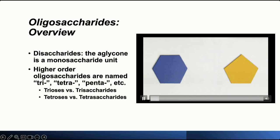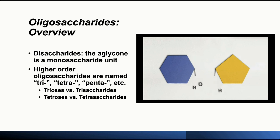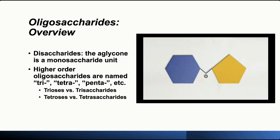These are two monosaccharides that meet each other and go through a condensation reaction. During this reaction, one molecule gives up its hydrogen ion and the other gives up its hydroxyl group. This produces a water molecule, and the two monosaccharides form a bond called a glycosidic bond. Because the reaction gives off water, it's called a condensation reaction.